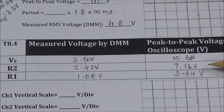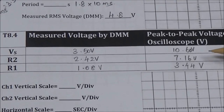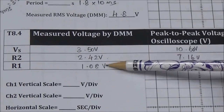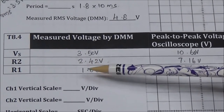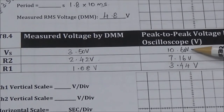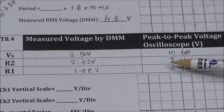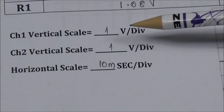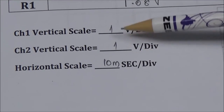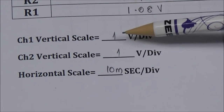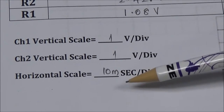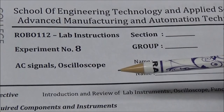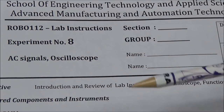The voltage across R2 is 7.16 volts peak to peak with RMS of 2.42 volts. Subtracting from the supply, the peak to peak voltage across R1 is 3.44 volts. Both channel 1 and channel 2 showed 1 volt per division for the vertical scale, with the horizontal scale at 10 milliseconds per division. We are done with this experiment — thanks for watching.